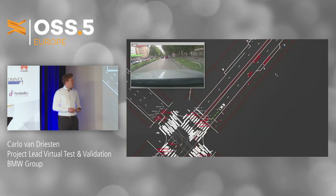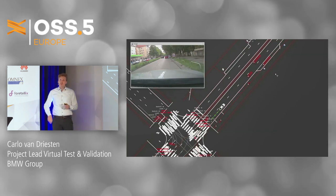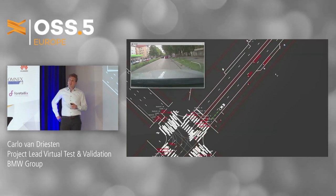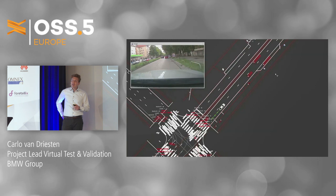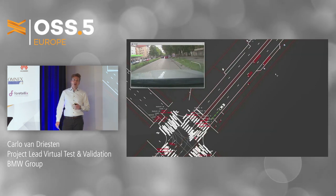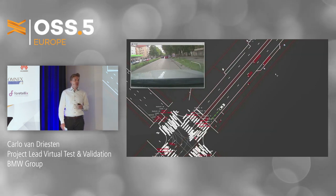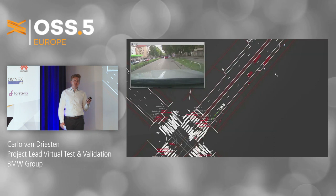So what if we want to replace all these sensors that we have in reality with models, and model all the imperfections that we have seen — because those are the imperfections that the environment-perceiving module is struggling with?